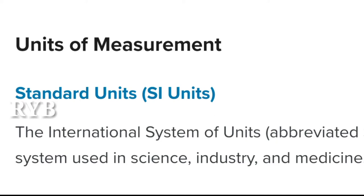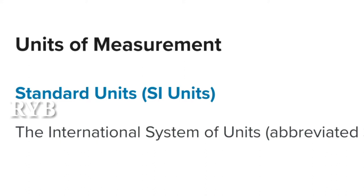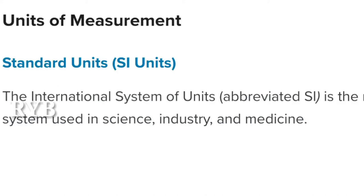Units of measurement: there are many types of units you studied in earlier schooling. MKS system, CGS system, and FPS system. In the MKS system: meter, kilogram, second. In the CGS system: centimeter, gram, second — covering length, mass, and time. These three are the basic units. The international system of units, abbreviated as SI, is the metric system used in science, industry, and medicine.